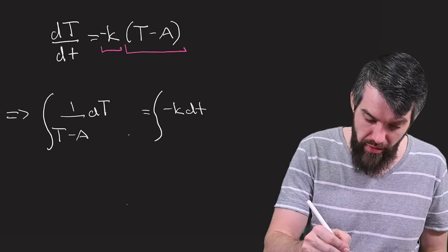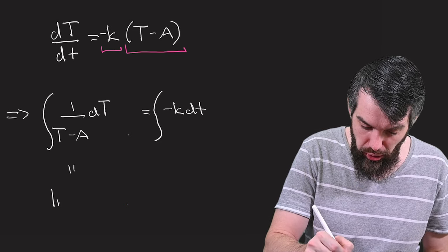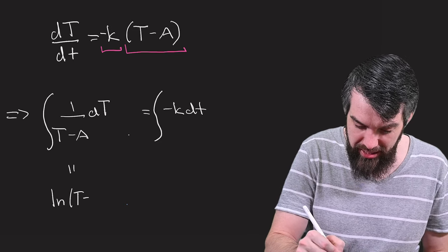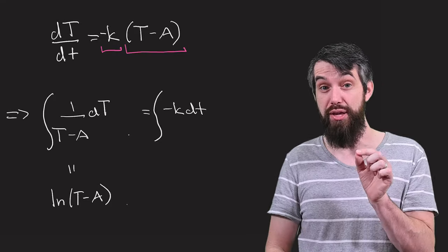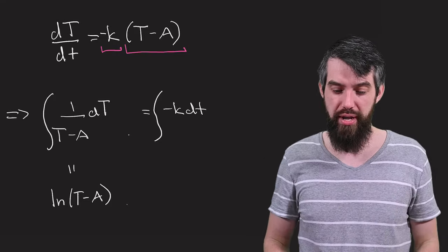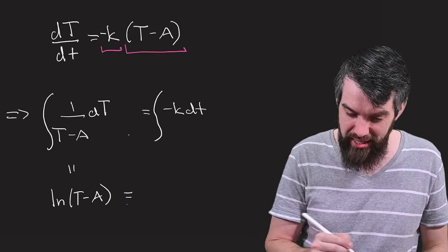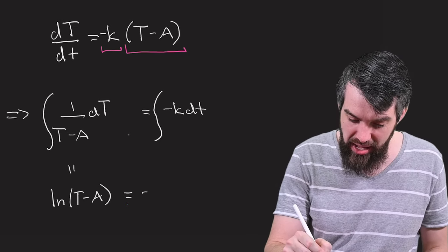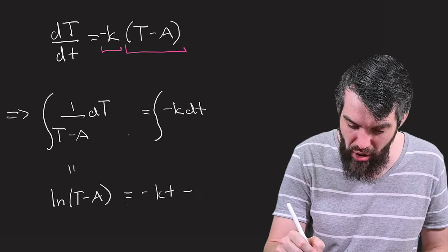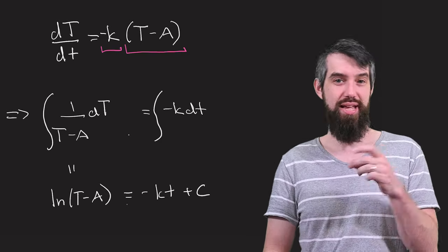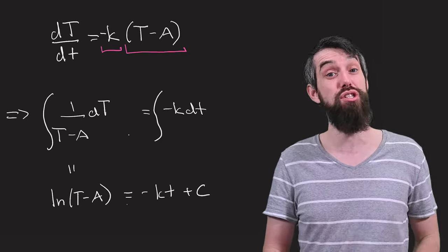Now it's an integration problem. On the left, this is going to be equal to the logarithm of T minus A. I don't have to worry about absolute values at all because, well, it's a positive quantity. On the right-hand side, I have my negative. K becomes Kt. And then I cannot forget that whenever you integrate indefinitely, you have this constant of integration, so I put my plus C down.